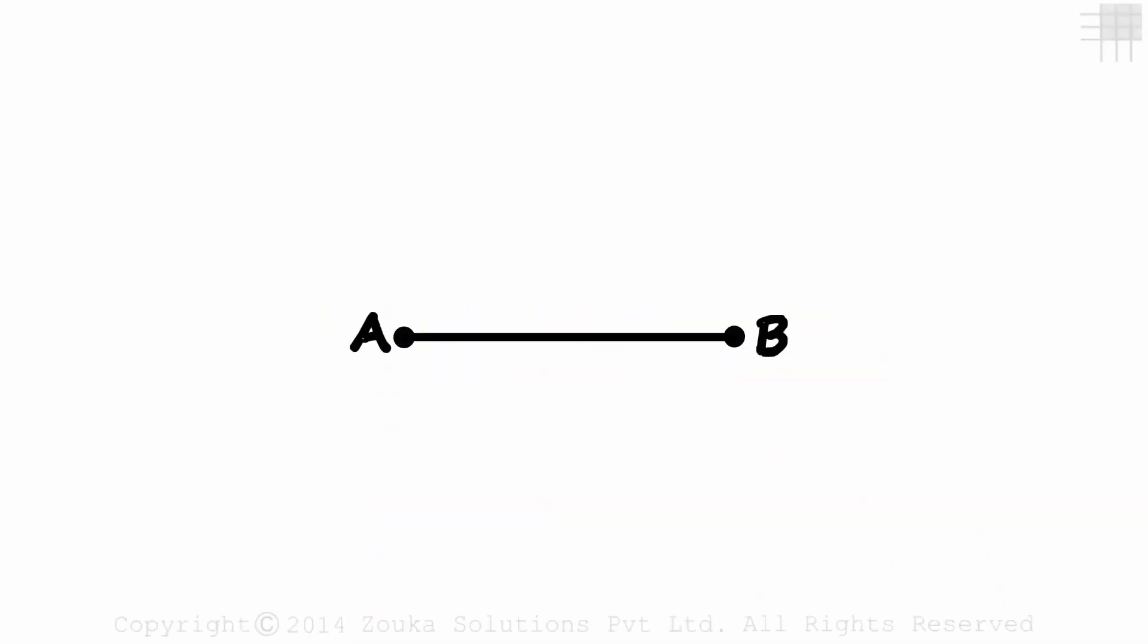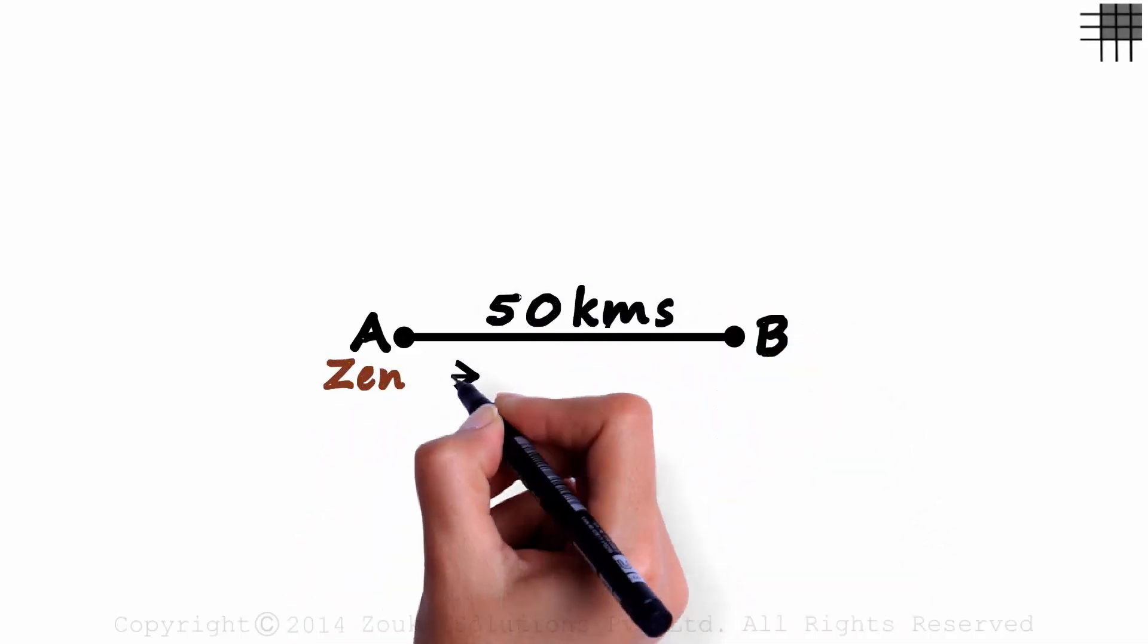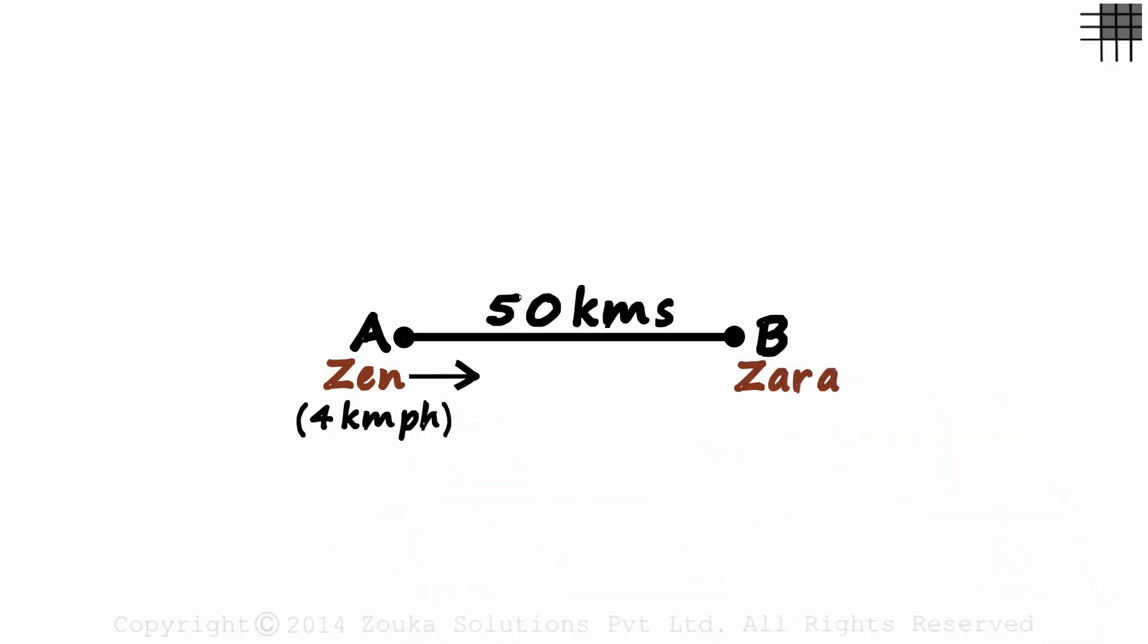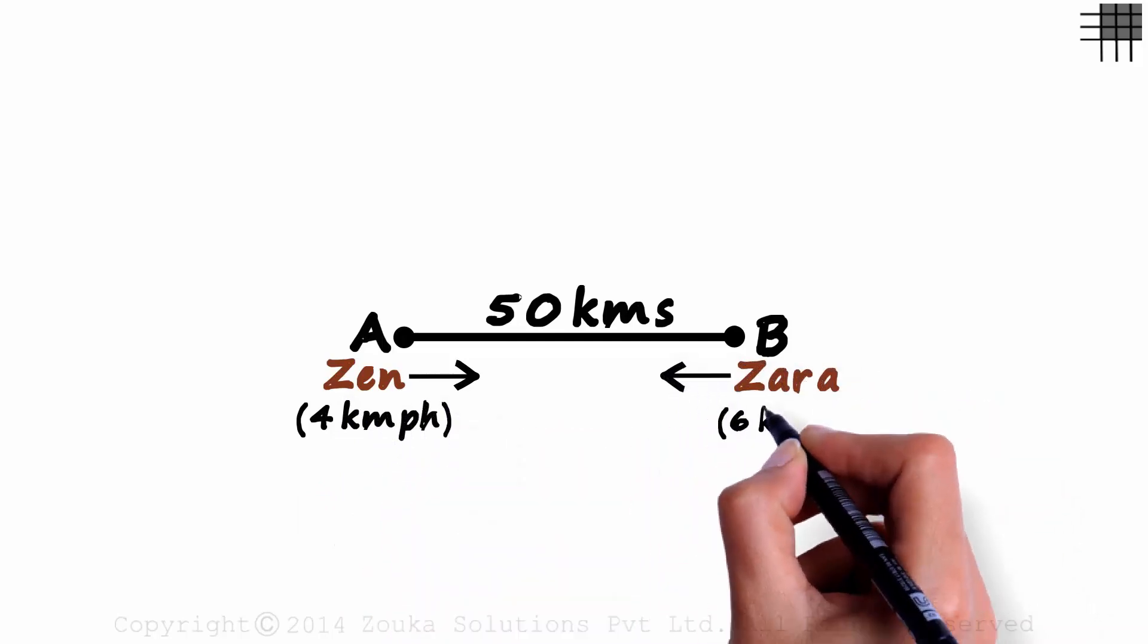The distance between points A and B is 50 kilometers. Zen travels from point A towards B at 4 kilometers per hour, and Zara travels from point B towards point A at 6 kilometers per hour.